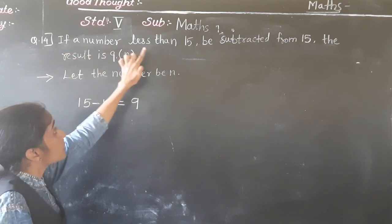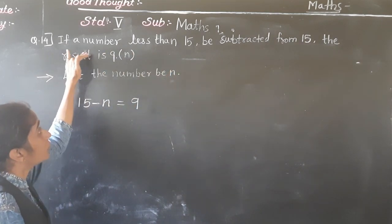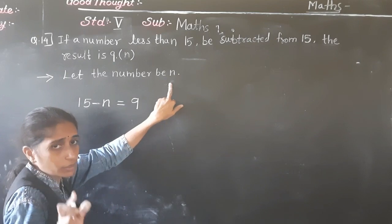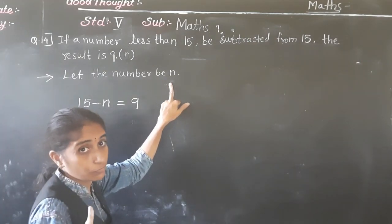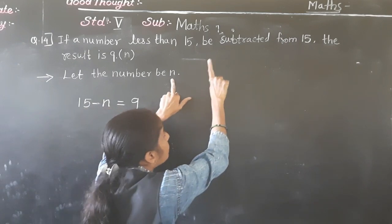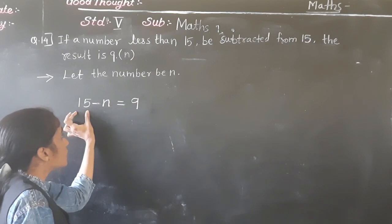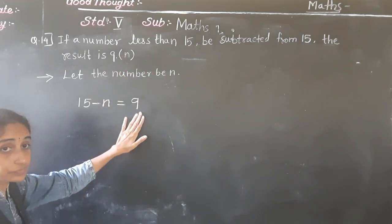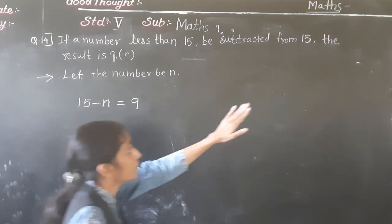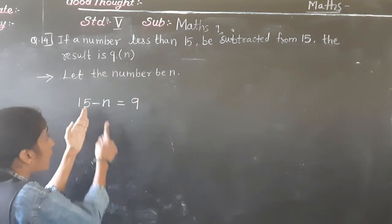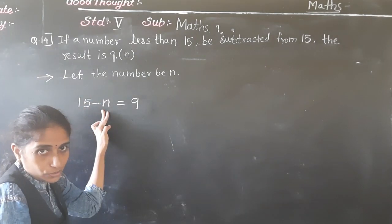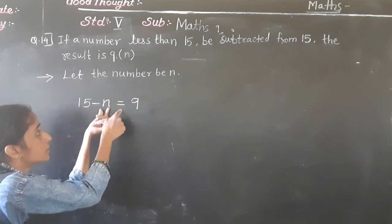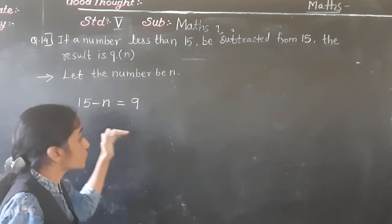If a number is less than 15 — let the number be N, which is smaller than 15. Be subtracted from 15 means N should be subtracted from 15. The result is 9, meaning when we subtract this number from 15, we get 9. So let's solve this equation.